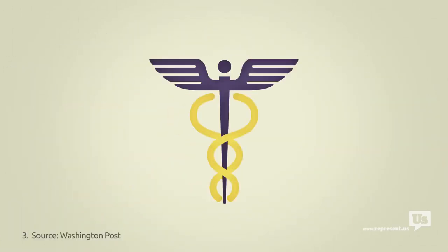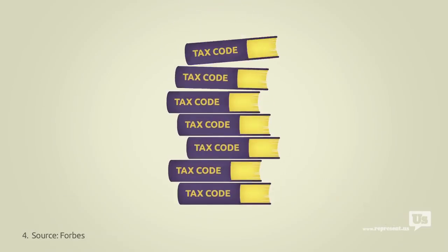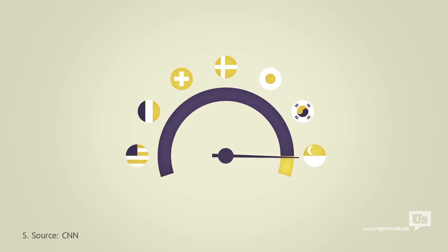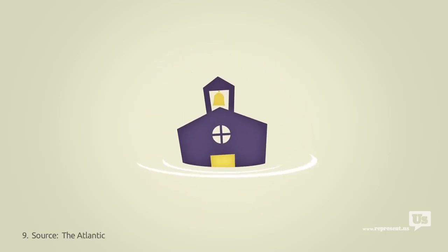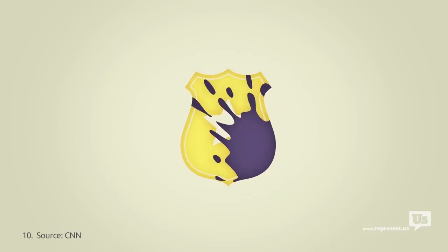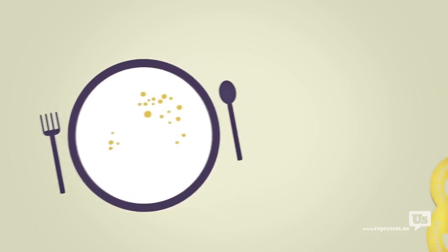We pay for it with the most expensive health care in the world. We pay for it with a tax code that's a complete mess. We pay for it with internet that's slower and more expensive, with wasteful spending, a floundering education system, a catastrophic drug war, and one in five American children born into poverty. Almost every major issue we face as a nation can be traced back to this graph.